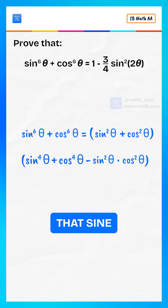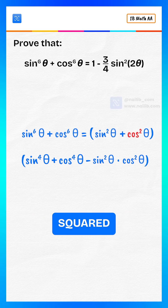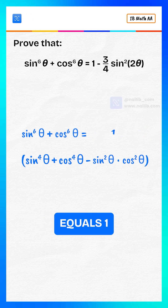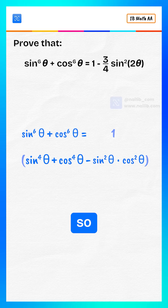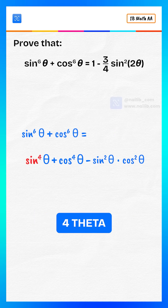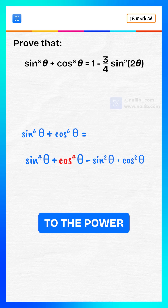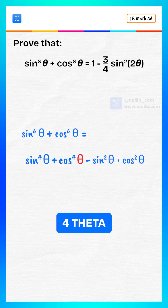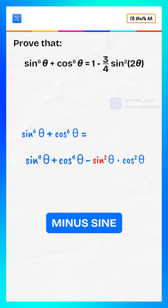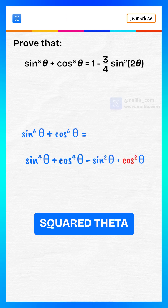We know that sine squared theta plus cosine squared theta equals one. So the expression simplifies to sine to the power four theta plus cosine to the power four theta minus sine squared theta times cosine squared theta.